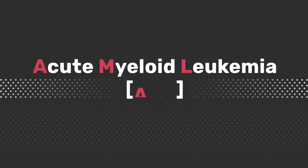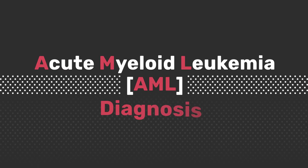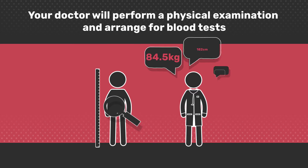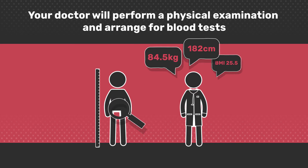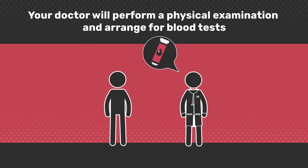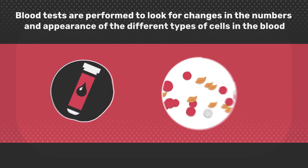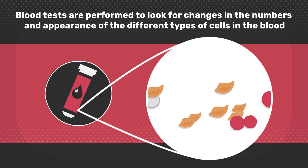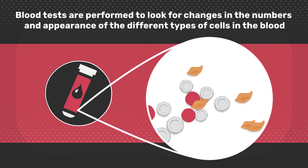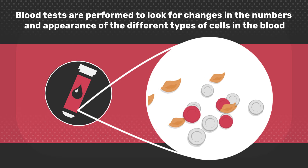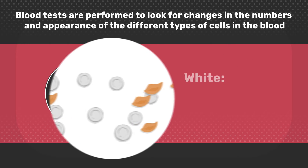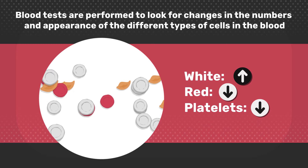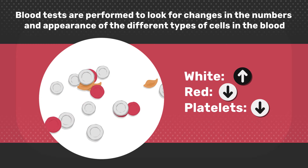There are a number of tests that are used to diagnose AML. To start with, your doctor will perform a physical examination and arrange for blood tests. Blood tests are performed to look for changes in the numbers and appearance of the different types of cells in the blood. The presence of an abnormally high number of white blood cells could be an indication of AML and further testing would be needed.